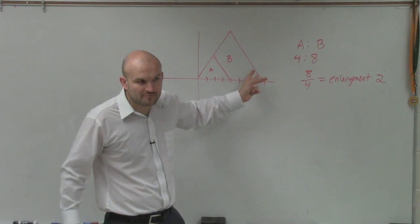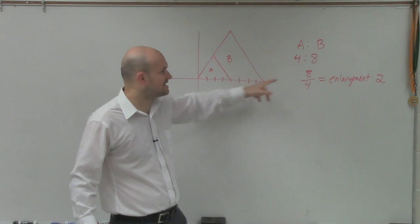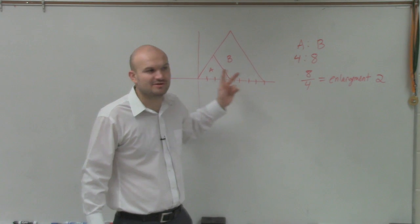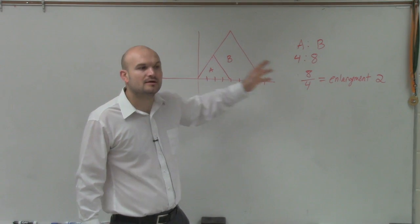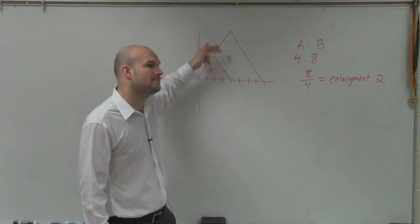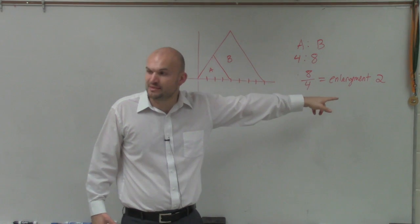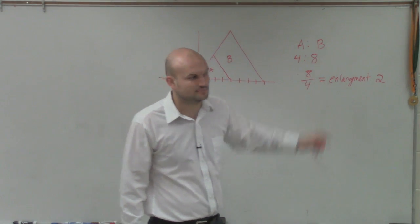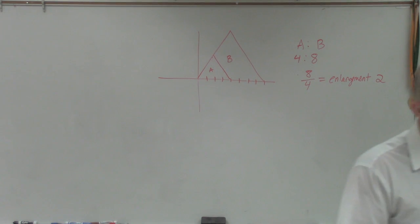You won't want to say A is one-half of B. So you wouldn't want to say 4 over 8, because then it would say A is one-half of B. What we want is from A to B. What do I need to do to go from A to B? I would need to enlarge by a scale factor of 2. Does that mean that B is equivalent to 2A? Yes.